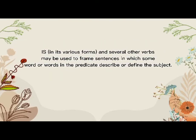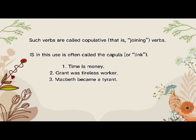The verb 'to be' in its various forms, and several other verbs, may be used to frame sentences in which words in the predicate describe or define the subject. The verb 'is' is known as a state of being verb — it does not express any specific activity or action, but instead describes existence. The most common state of being verb is 'to be' along with its conjugations: is, am, are, was, and so on. Such verbs are called copulative — that is, joining verbs.